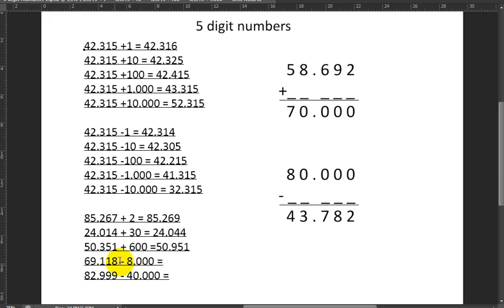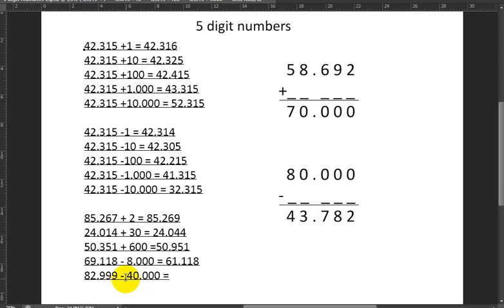Next up I'm subtracting. Hopefully you noticed that the last two were subtractions. Here I have 69,118 minus 8,000. Since I'm subtracting eight thousands, the thousands will decrease by eight. My result will be 61,118. Next up we have 82,999 and we're subtracting 40,000. Since we're subtracting four tens of thousands, the tens of thousands will decrease by four, and we'll get 42,999.